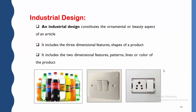For industrial design, an industrial design constitutes an ornamental or aesthetic aspect of an article. It includes three-dimensional shapes or features of a product, as well as two-dimensional features such as patterns, lines, or color of a product. For example, different cold drink bottle companies each have their own unique bottle shape. Similarly, switches from different companies like Legrand and Anchor have different shapes because those designs are protected under the Industrial Design Act.